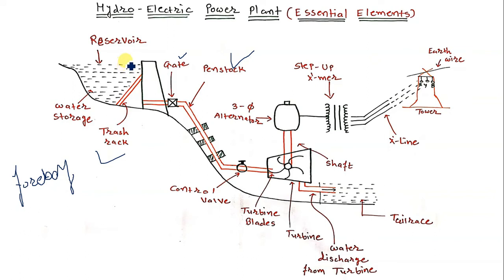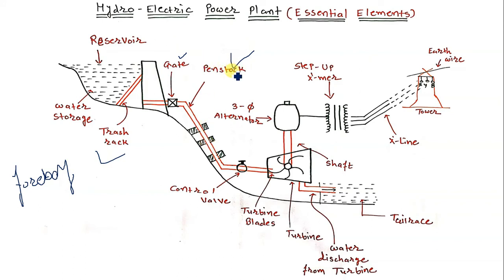The penstock provides kinetic energy to the water due to the difference in water head. If the water head is low the kinetic energy is correspondingly lower, and if the head at the dam is high then the kinetic energy of the water is higher. That is the function of the penstock.